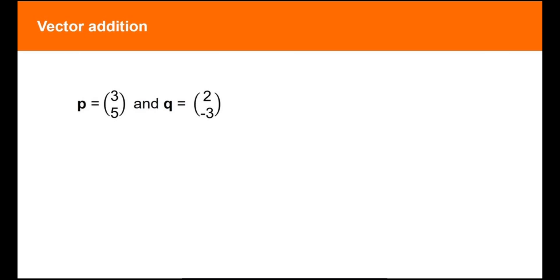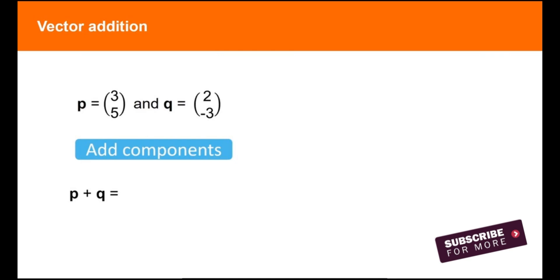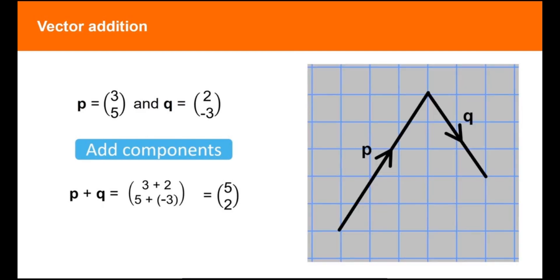You can add vectors with or without the use of a diagram. For example, if you want to add two vectors, p and q, you can add the horizontal components and then the vertical components. This will give you the vector 5, 2, 5 to the right and 2 up. You can always check your results using a diagram.